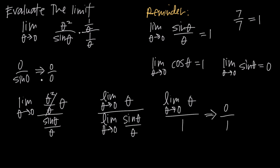Now, instead of the indeterminate form we got originally when we evaluated at theta equals 0, we have 0 divided by 1, which we can easily evaluate because there's no 0 in the denominator — this isn't undefined. 0 divided by 1 is just 0, so the value of the original limit is 0.